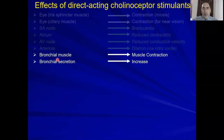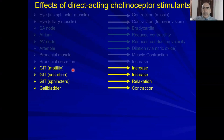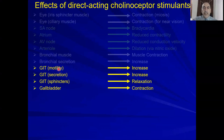On the bronchi, muscarinic stimulation causes bronchial muscle contraction and increased secretion. On the GIT — remember, rest and digest — there is increased motility to enhance peristaltic movement and digestion, increased secretion to help digestion, and relaxation of sphincters, ultimately facilitating defecation.